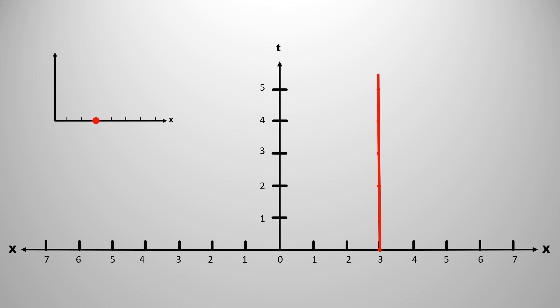If an object travels a distance of 1 meter in 1 second to the right side, then it is represented by a line at 45 degree angle.